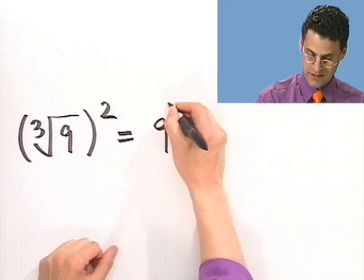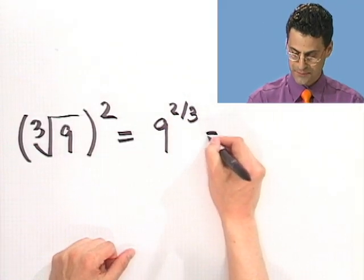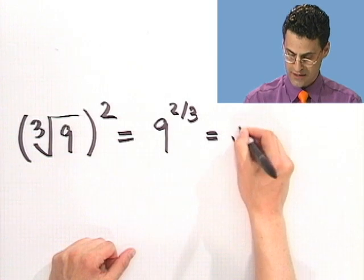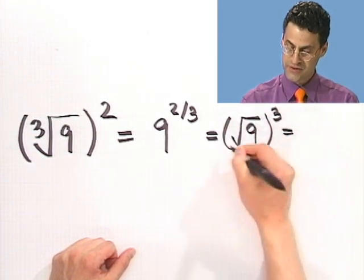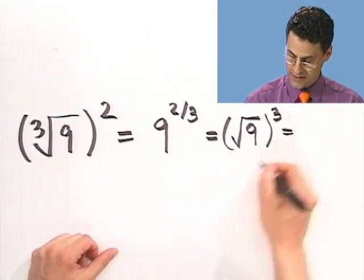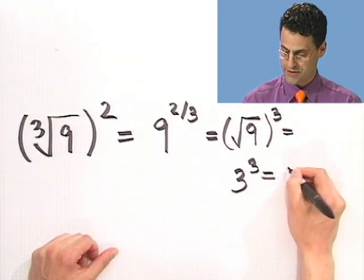So here's what I do. First, I write it like a fractional exponent, 9 to the 2 thirds. And then I use the fact that I can sort of flip these things around. And so I'm taking the square root of 9 and then I cube it. And then the square root of 9 I know is 3. So this would be 3 cubed. And 3 cubed is 27.